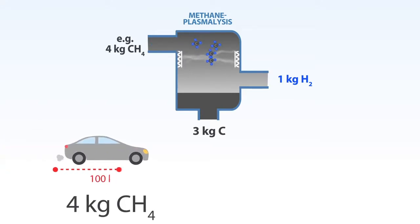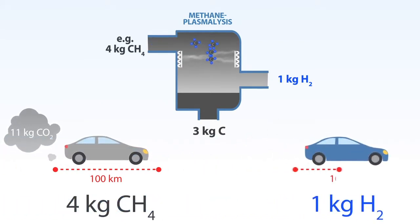With 4 kg of methane, a natural gas vehicle can drive 100 km, producing 11 kg of CO2. With 1 kg of hydrogen, a fuel cell vehicle can also drive 100 km, but it does not produce any CO2.